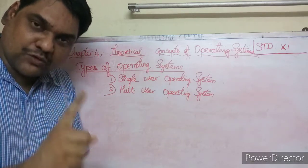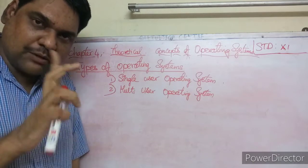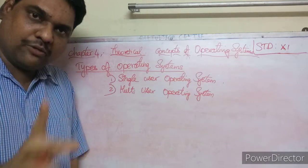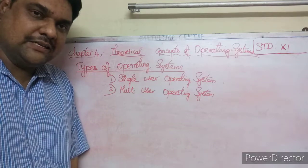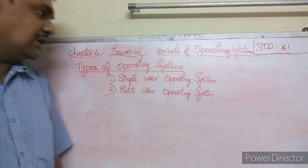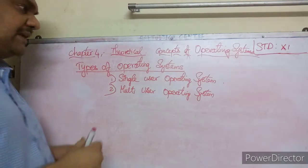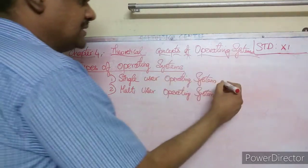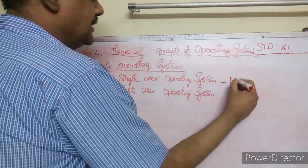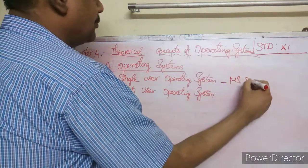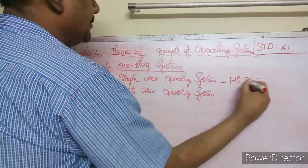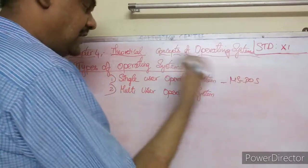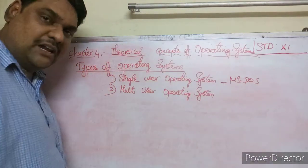A single-user operating system allows only one user to use it at a time. Example: MS-DOS is a single-user operating system.